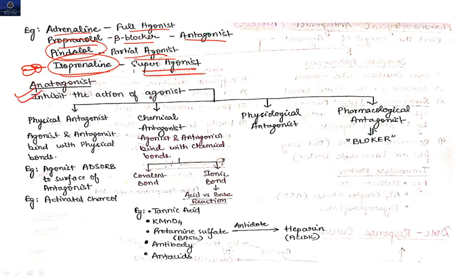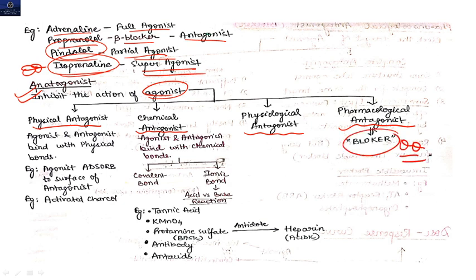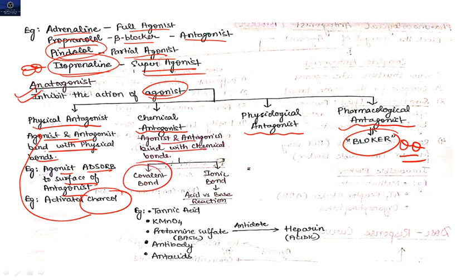Antagonists inhibit the action of agonists. Antagonists are categorized into four groups: physical antagonist, chemical antagonist, physiological antagonist, and pharmacological antagonist. Pharmacological antagonists are also known as blockers. In physical antagonism, agonist and antagonist bind with physical bonds — activated charcoal is an example. In chemical antagonism, they bind with chemical bonds, either covalent or ionic — examples include tannic acid, KMnO4, and protamine sulfate, which is an antidote for heparin.